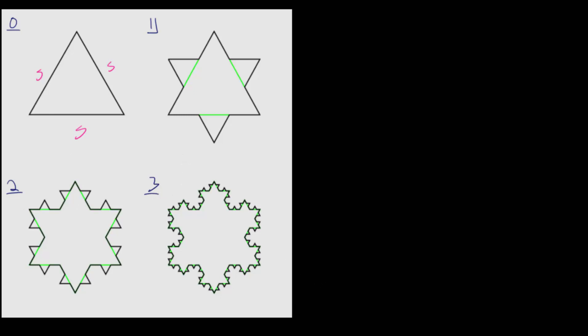And to find the area let's think about this piece by piece. So we can say that the total area is equal to the area from step 0. We can find this area using that formula we just found.